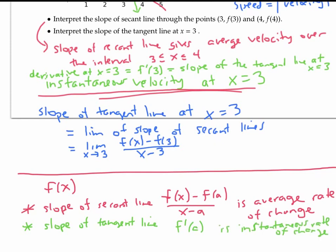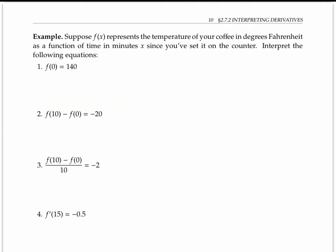Let's see how that works in a couple of other examples. Let's suppose that f of x represents the temperature of a cup of coffee in degrees Fahrenheit as a function of time in minutes, since you set it on the counter.